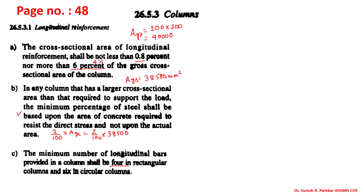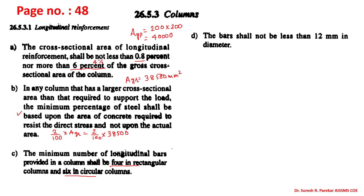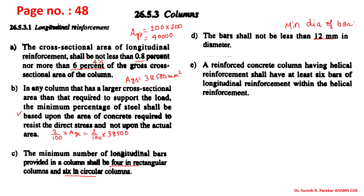The minimum number of longitudinal bars in a rectangular column is four, and in a circular column it is six. The bar diameter in a column should not be less than 12 mm — that is the minimum diameter of bar.